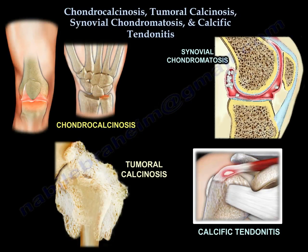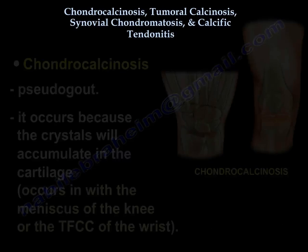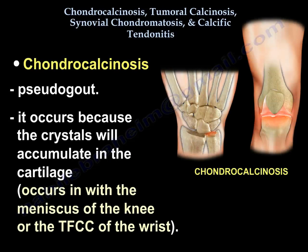Reviewing the four entities: Chondrocalcinosis is a pseudogout and it occurs because crystals accumulate in the cartilage. The cartilage can be the knee joint cartilage, the meniscus, or the wrist cartilage like the triangular fibrocartilage. So you will see calcification on x-rays of the knee or x-rays of the wrist.